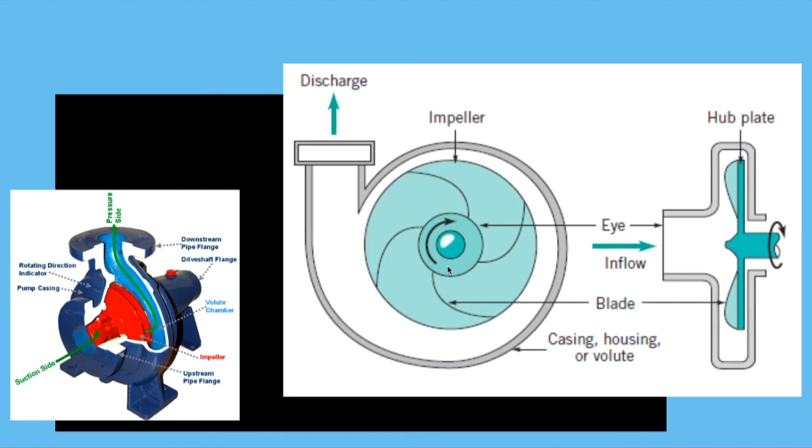You can see this is the inlet, the eye. It goes inside, and you have this plate. It starts moving very, very fast, so what it does is essentially the fluid doesn't have any way out, so it will increase in pressure. It starts moving clockwise and eventually goes to discharge.